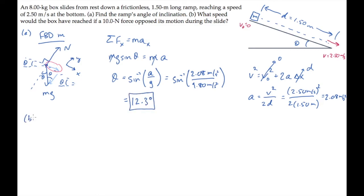Part B asks us what speed the box would have reached if a 10-newton force opposed its motion during the slide. The only change we need to make here is to add one force, we'll call it F, to the free-body diagram.